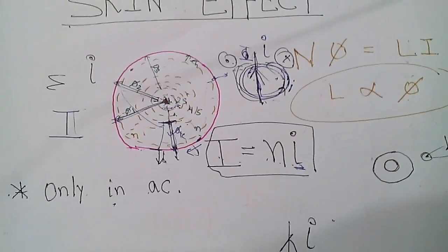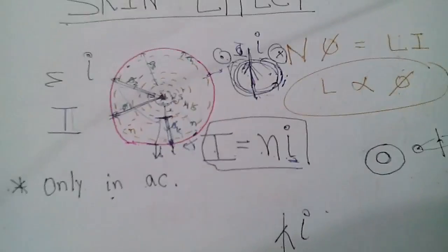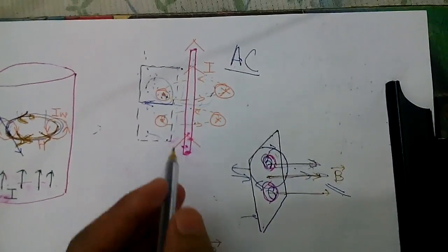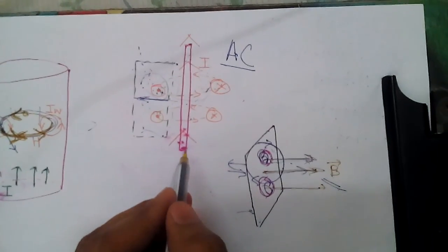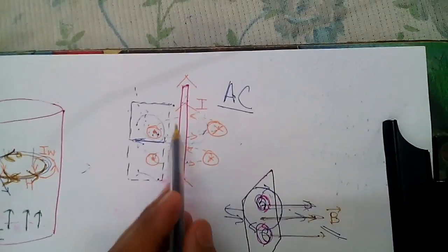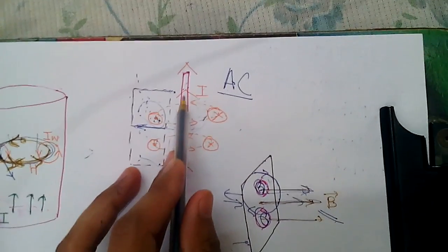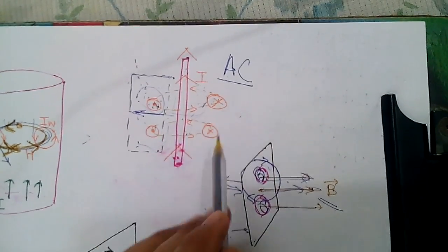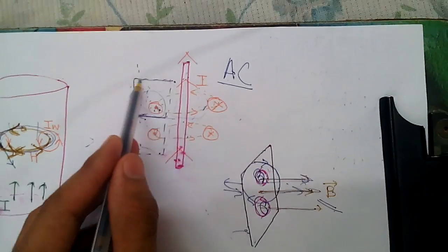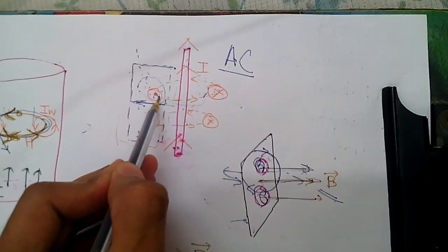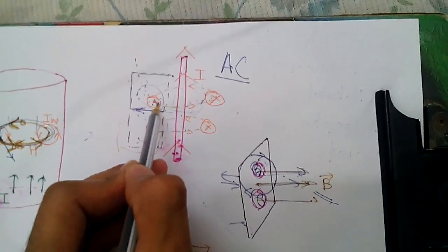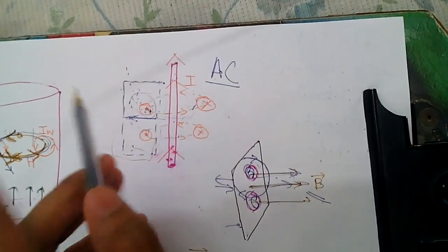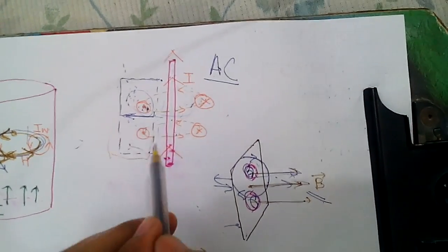Now, eddy current effect and Lenz's law come into the picture. In AC, we have a changing current, which produces a changing magnetic field. Eddy currents say that if a conductor is placed in a changing magnetic field, that changing magnetic field will induce a current in that conductor. The direction of that induced current will be such that it opposes the changing magnetic field, according to Lenz's law.